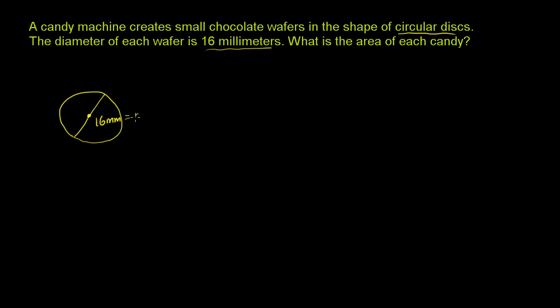So the area, one of the famous formulas of geometry for the area of a circle is pi r squared, where pi is 3.14159, on and on and on, the ratio of the circumference to the diameter of a circle.